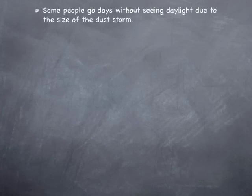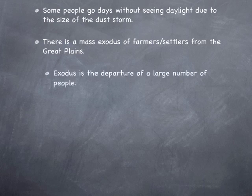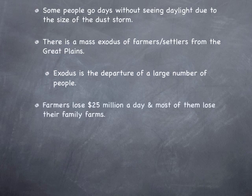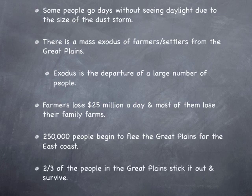Some people went days without seeing daylight due to the size of the storm. There was a mass exodus of farmers and settlers from the Great Plains — exodus means a departure of a large number of people. Farmers lost 25 million dollars a day combined, and most of them lost their family farms. 250,000 people began to flee the Great Plains for the East Coast or to move to cities. Two thirds of the people in the Great Plains stuck it out and survived.